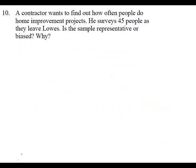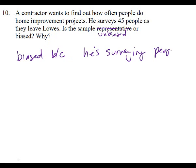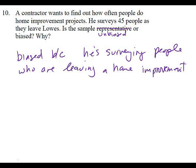A contractor wants to find out how often people do home improvement projects. He surveys 45 people as they leave Lowe's. Is the sample biased or unbiased, and why? Biased — because he's outside Lowe's surveying people who are obviously going to be doing home improvement projects. It's biased because he's surveying people leaving a home improvement store. You'll have to read through the multiple choice answers and decide which reason sounds best.